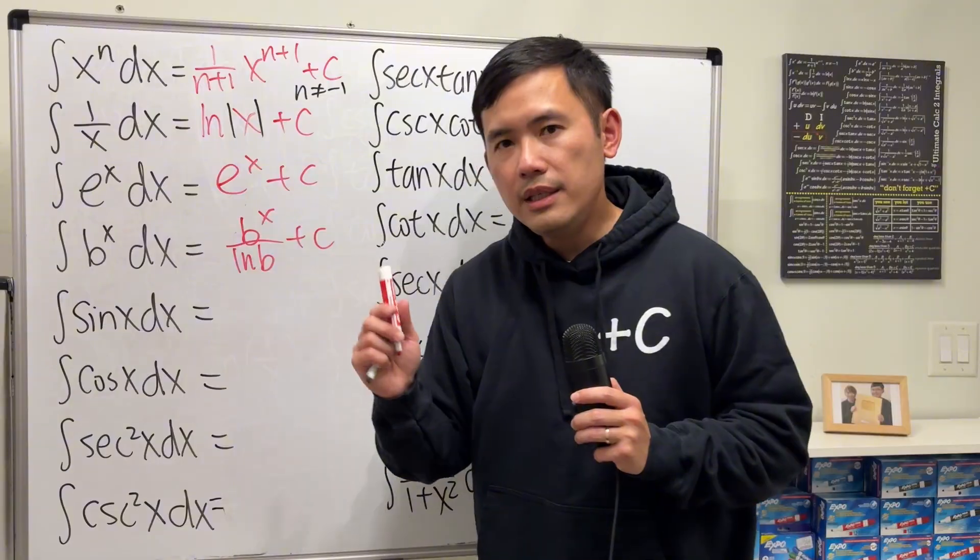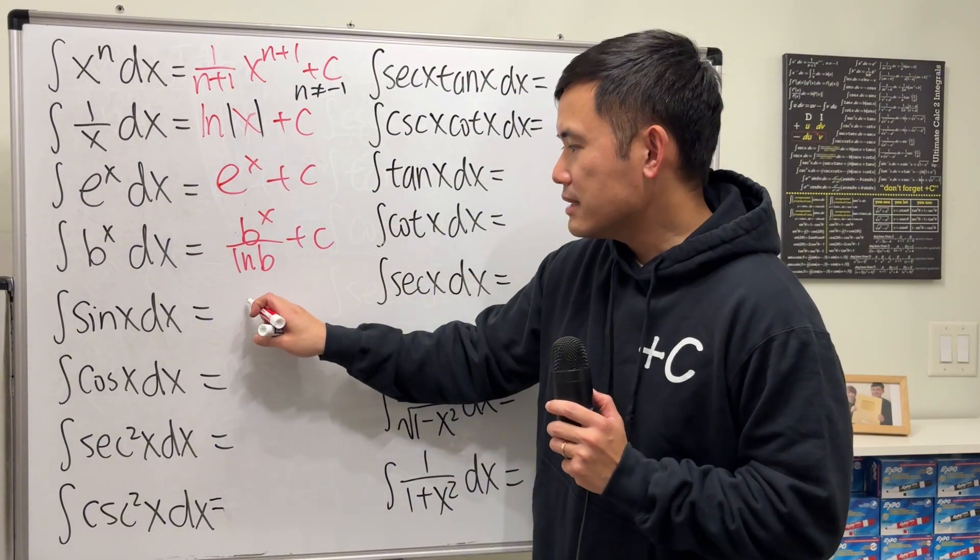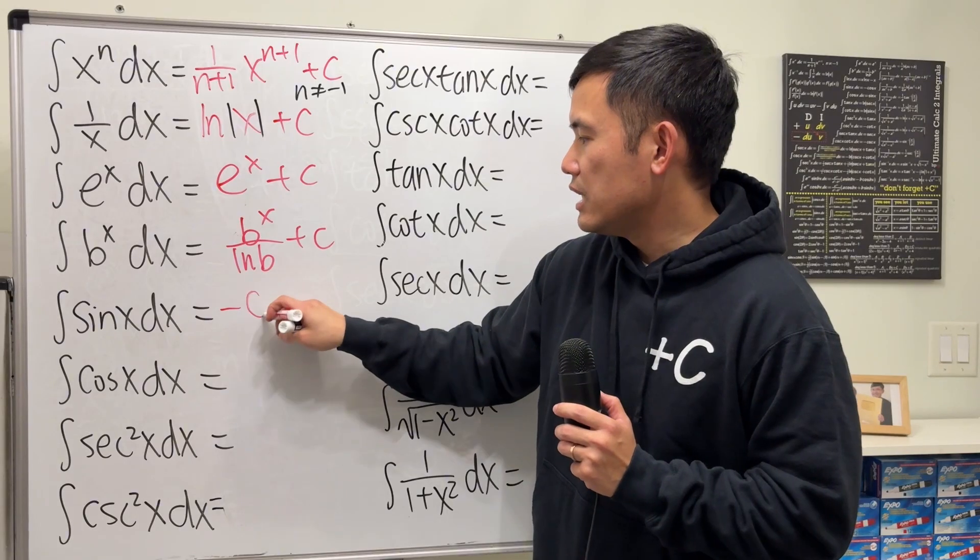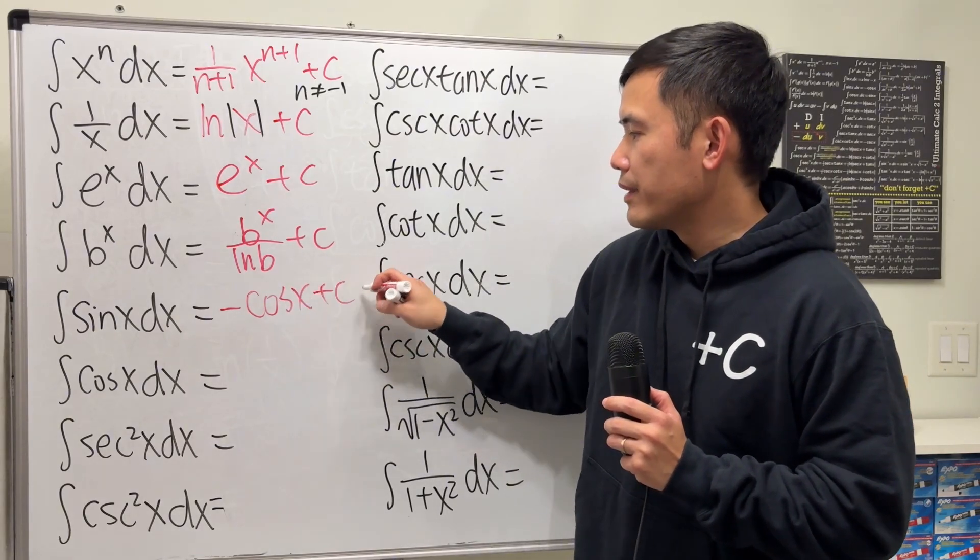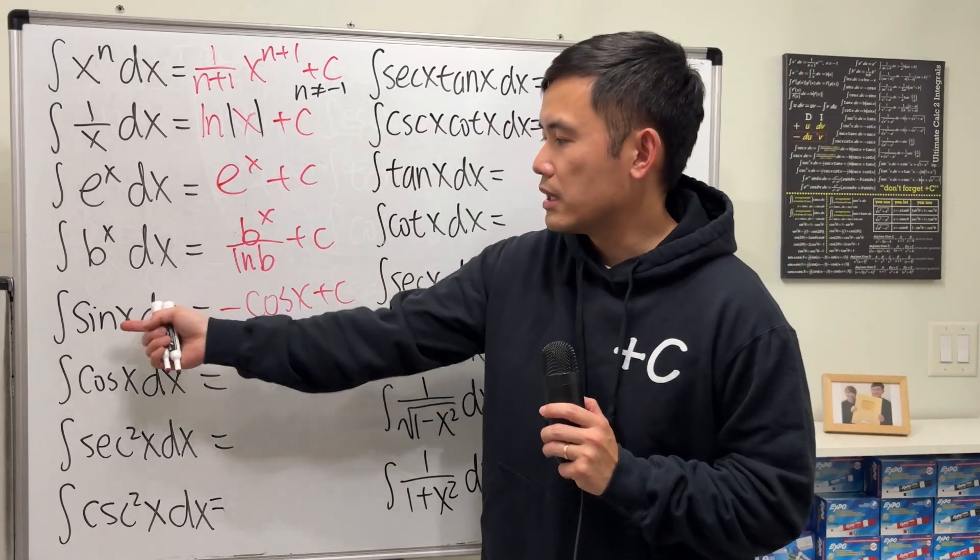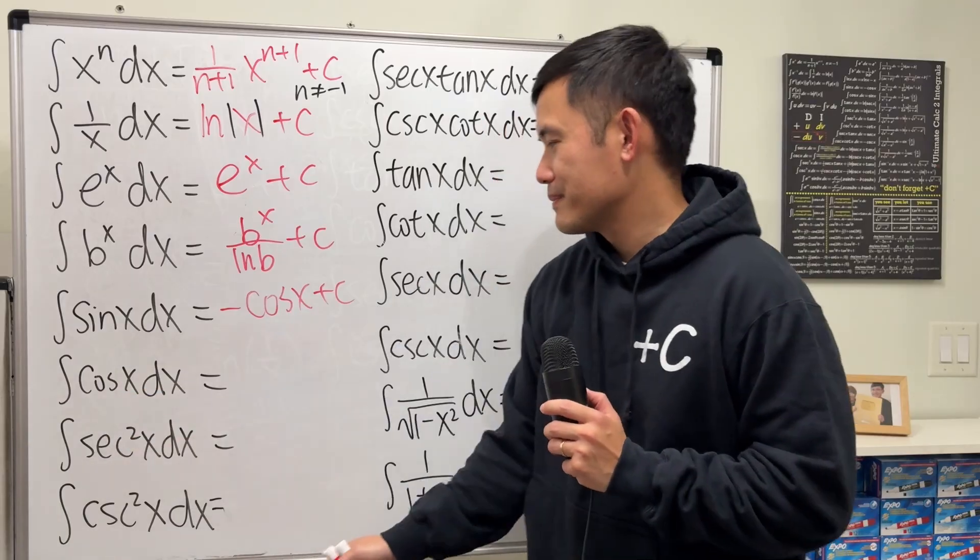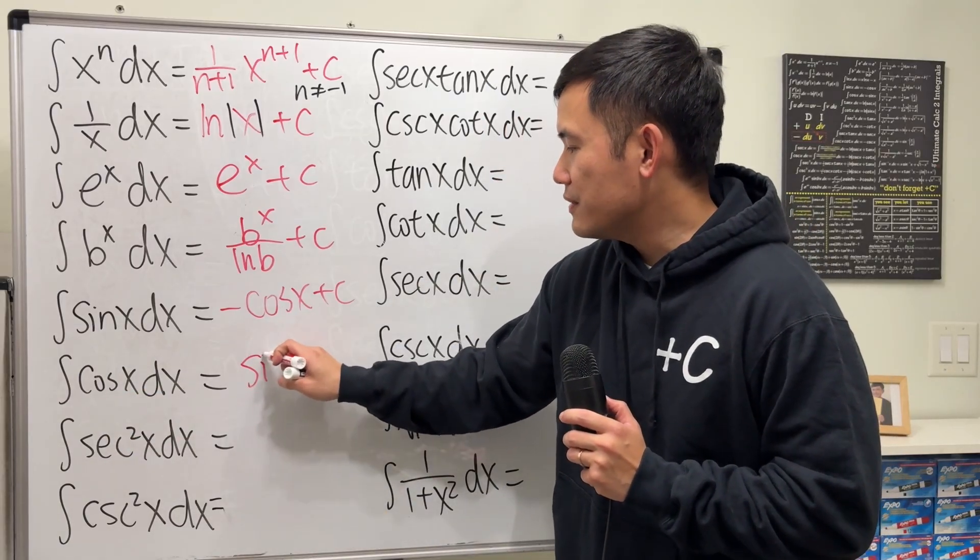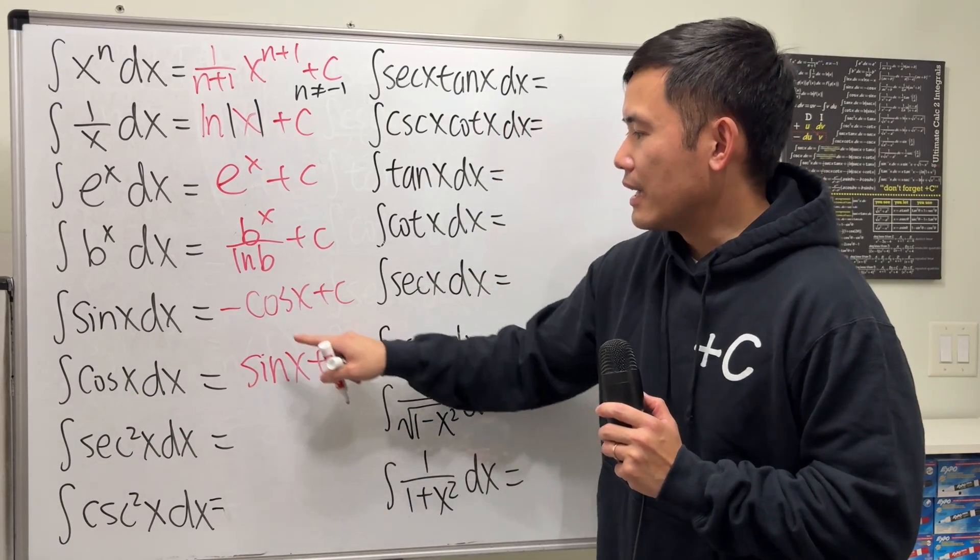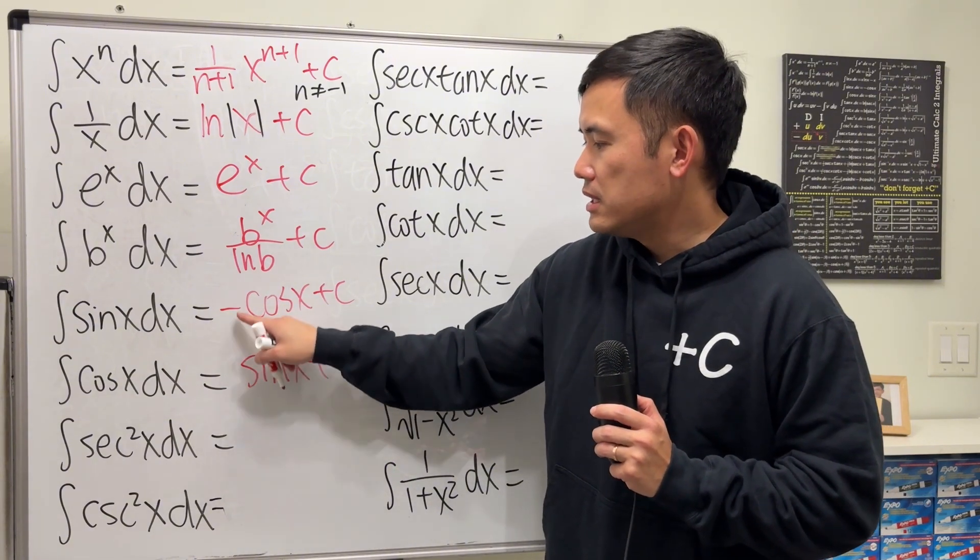What about the integral of sin x? The answer is not positive cosine, but rather negative cos x. Because if you differentiate cos x you get negative sine. You need another negative to get a positive. How about if you have the integral of cos x? The answer is positive sin x. Very common mistakes right here. Be careful with the positive and negative signs.